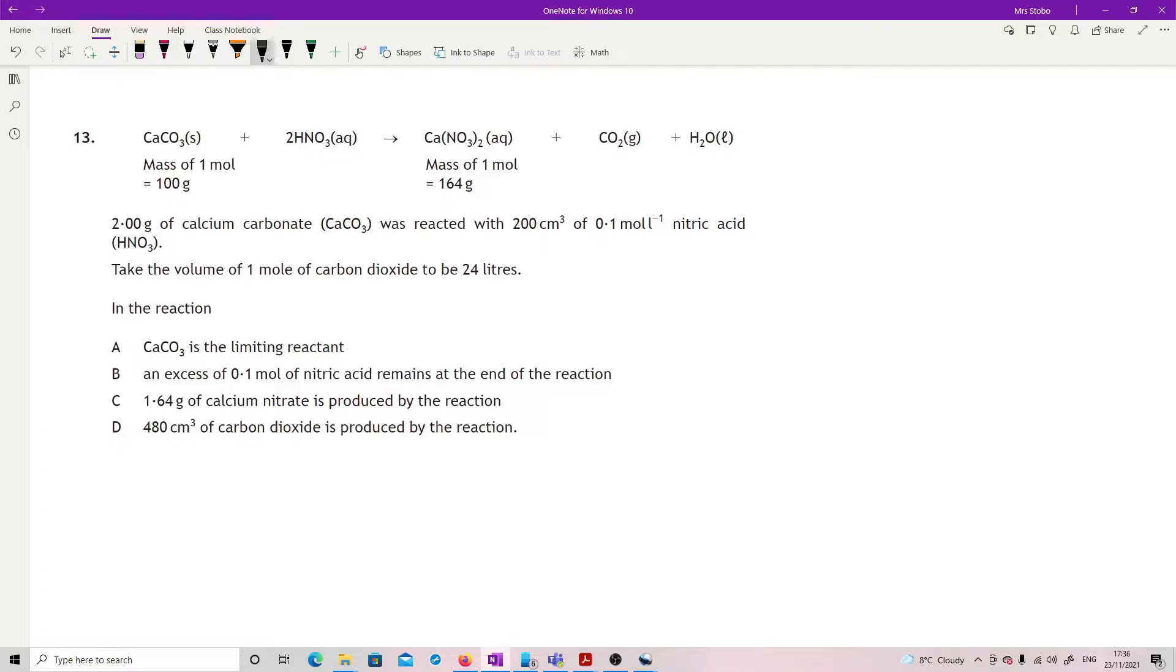Question 13: Okay, a little bit of work in this one, but as long as you don't panic you're fine. They've given you a lot of data: 2 grams of calcium carbonate was reacted with 200 cm³ of 0.1 molar nitric acid. Take the volume of one mole of carbon dioxide to be 24 liters. This is an excess question to start with, so let's do the excess. CaCO3, moles is mass divided by formula mass, so that's 2 divided by 100, so I have 0.02 moles. By this equation it's a one to two for the calcium carbonate to my nitric acid, so that would mean that I need 0.04 okay for this not to be in excess.